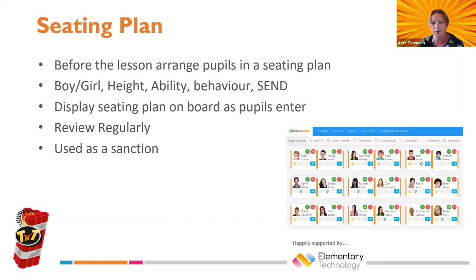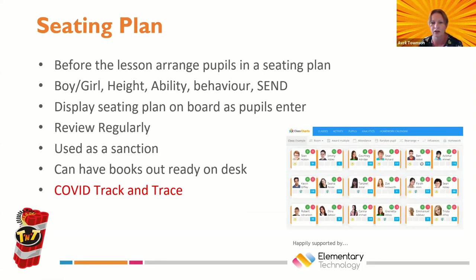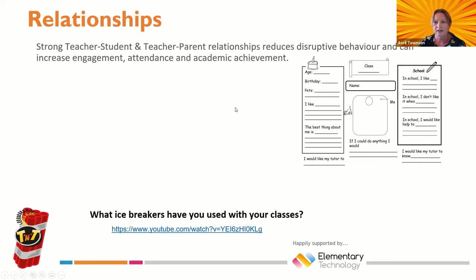There's a snippet from Class Charts on screen — my previous school had this and it's a great tool. You can arrange students around your classroom layout, draw out the table layout prior to your lesson, and review seating plans regularly. You can use the seating plan as a sanction too — if students like where they're sitting, you can suggest that if they're causing problems you might move them. I always have the desks set out with books ready for students to collect on the way in. Class Charts is also offering a new COVID track and trace feature so if there's an outbreak you can track and trace who a student has been sat with in other lessons.